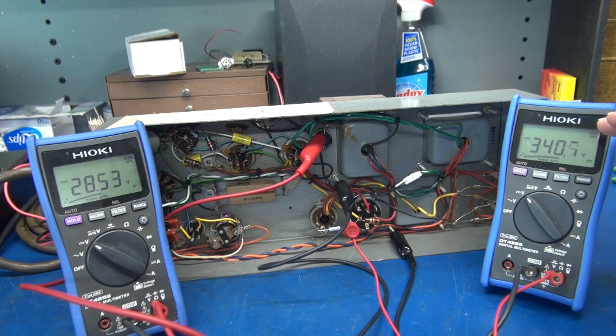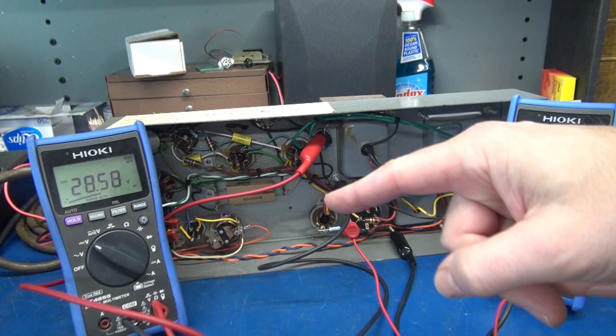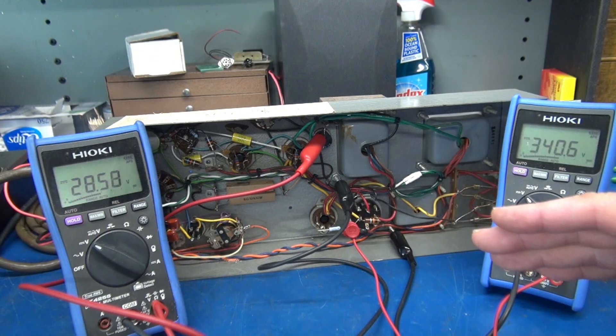So since we have elevated screen voltage, we're going to have elevated cathode voltage and your output tubes are going to run hot.